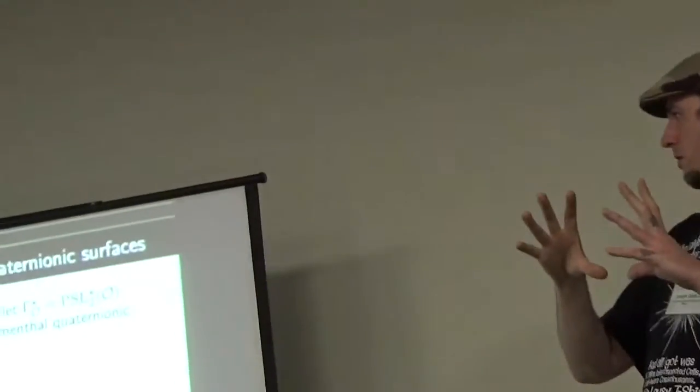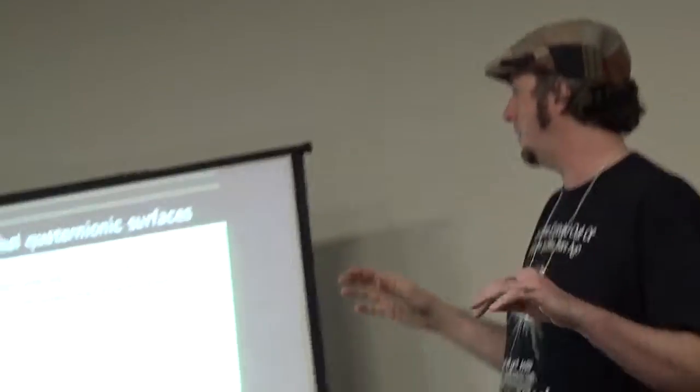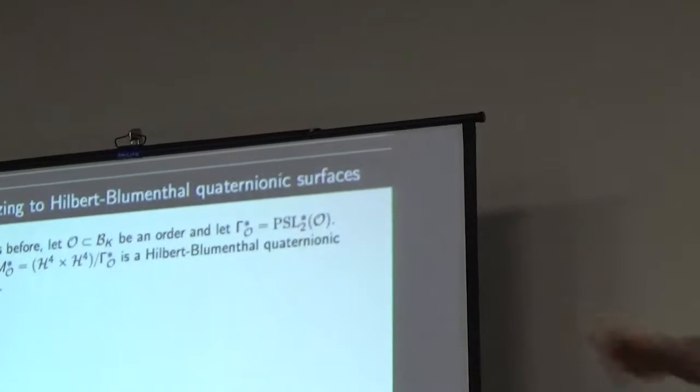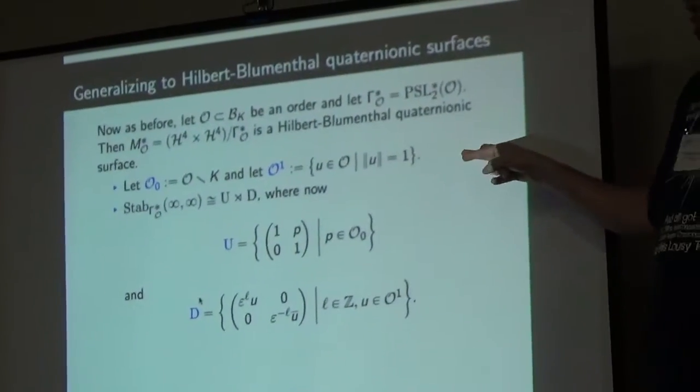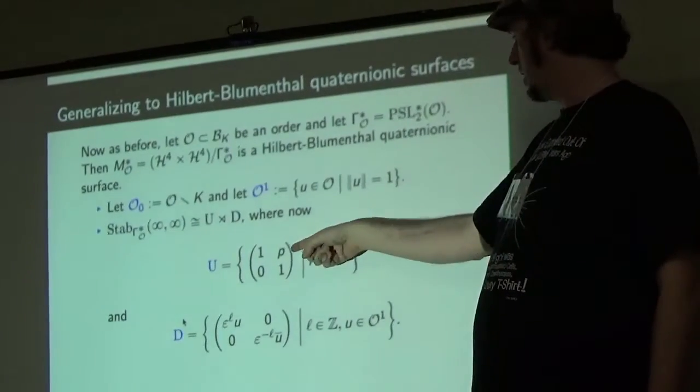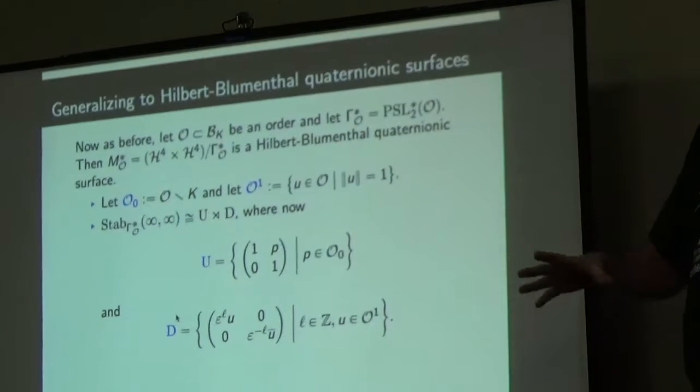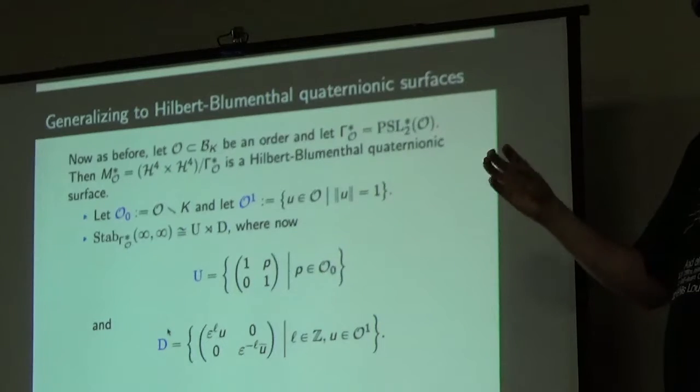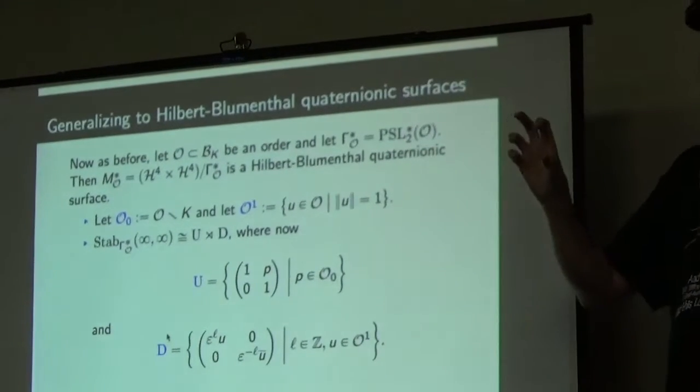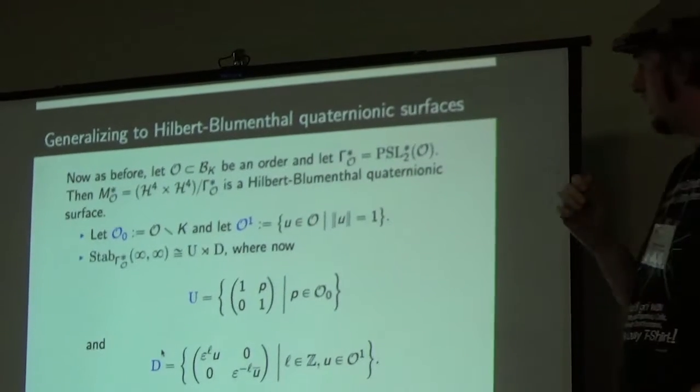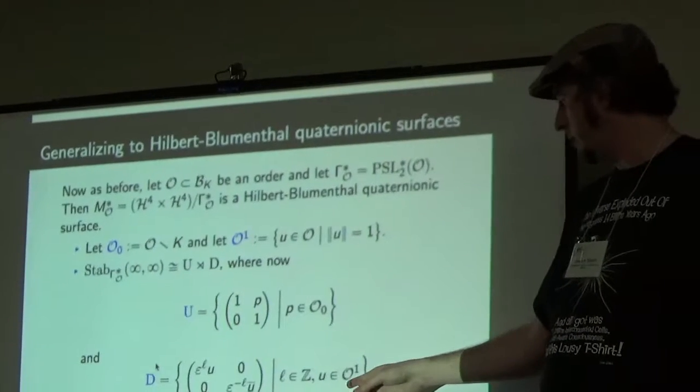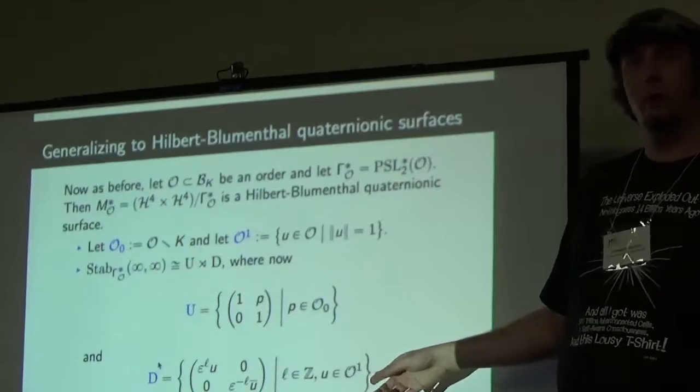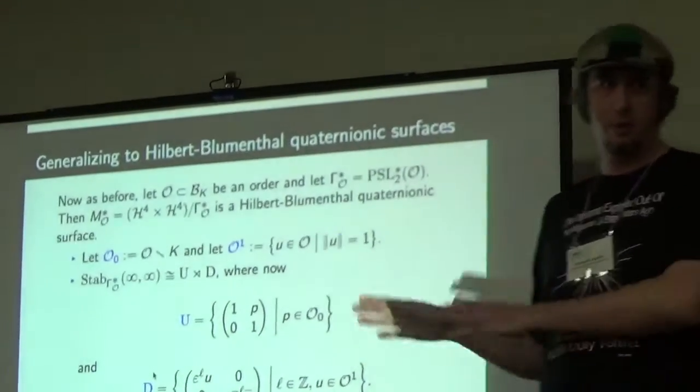The whole idea was to generalize this. And this part is stuff that we have yet to flesh out. But this is the idea. Now we're back into the case where I have hyperbolic four-space. I have an order in a quaternion algebra over a quadratic field. I take my discrete action on a product of copies of spaces like that with that group. I have a very similar kind of structure where the cusp group still has the semi-direct product decomposition. It's just instead of having an integer up here, I have a pure quaternion. So acting on this space, it's sort of like a six-dimensional affine group because you have these three things from the pure quaternions, and then each one of them has two linearly independent directions from a quadratic field.